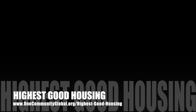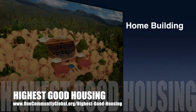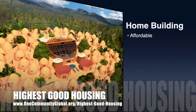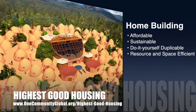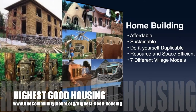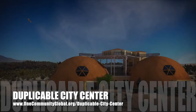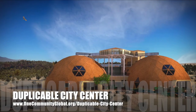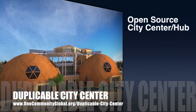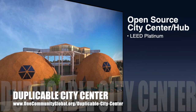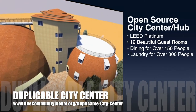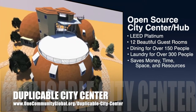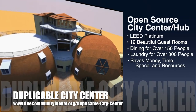The One Community approach to highest good housing is eco-artistic home building that is affordable, sustainable, do-it-yourself, duplicable, resource and space efficient, and consists of seven different sustainably constructed village models. One Community is also creating an open source duplicable city center designed to be LEED Platinum certified, provide 12 guest rooms, dining for over 150 people, and laundry and recreation space for over 300 people — all while saving money, time, space, and resources.